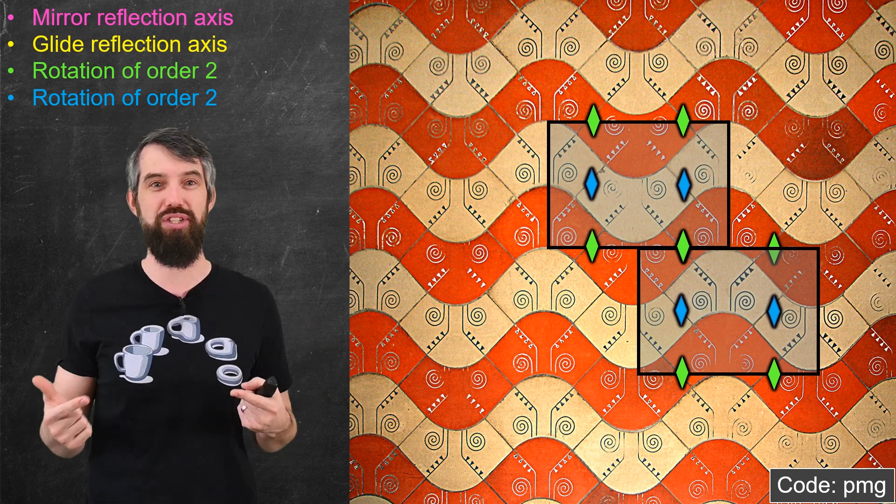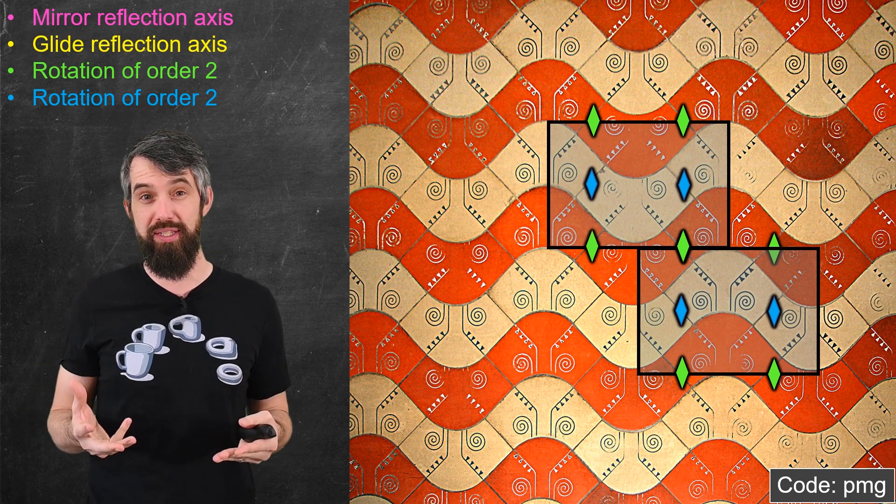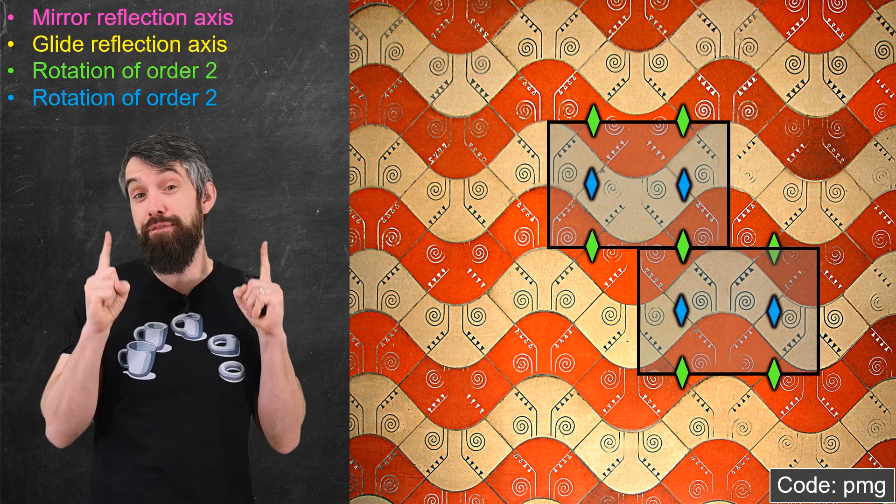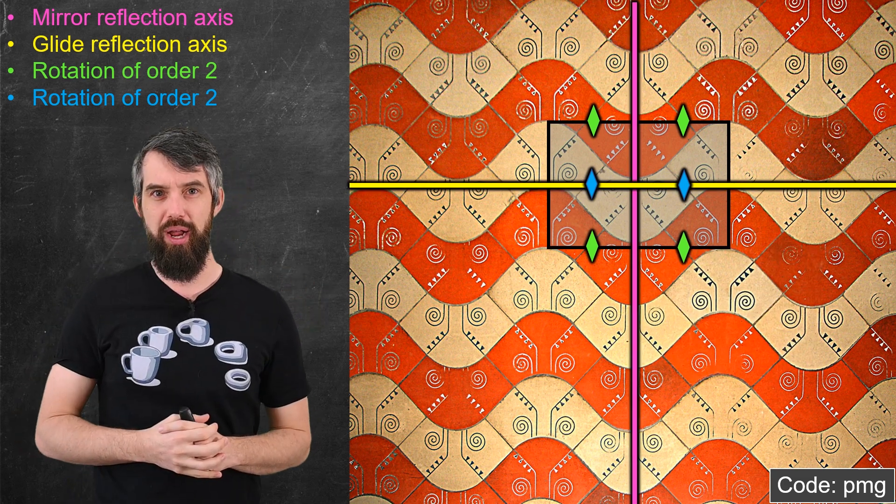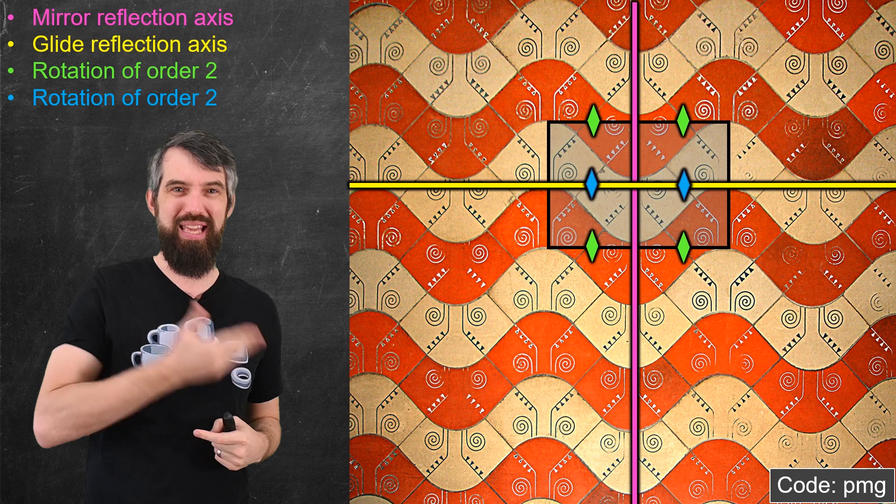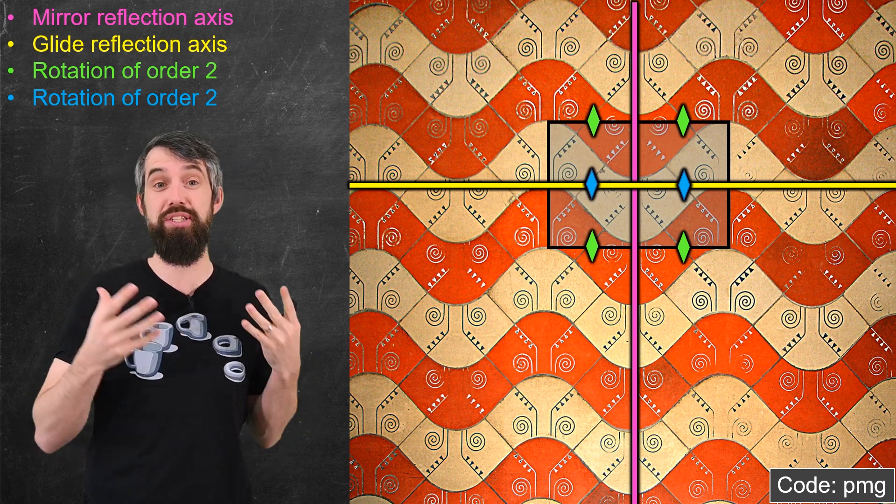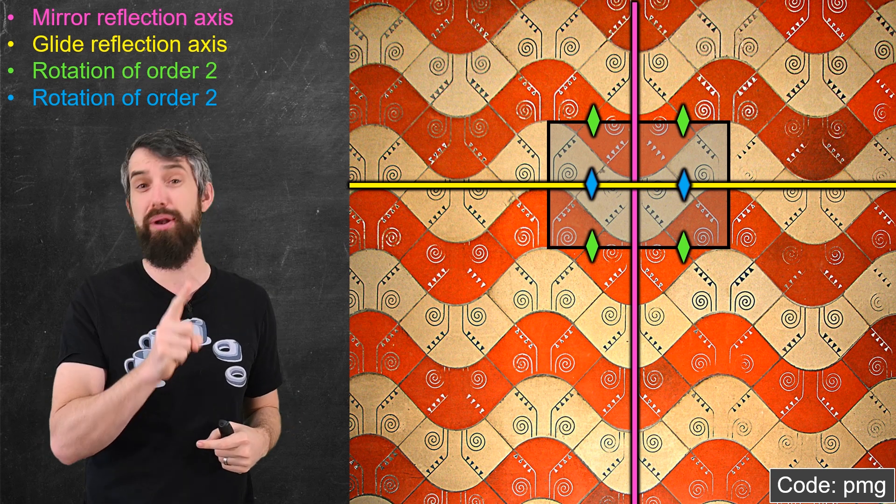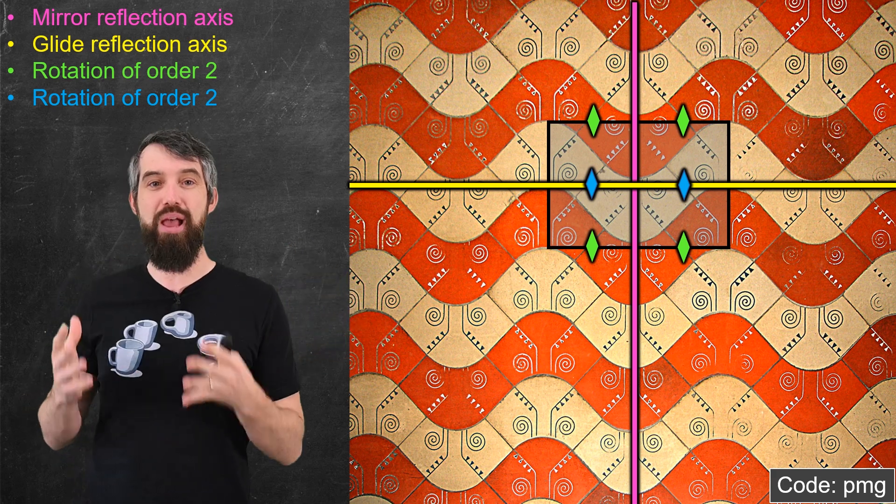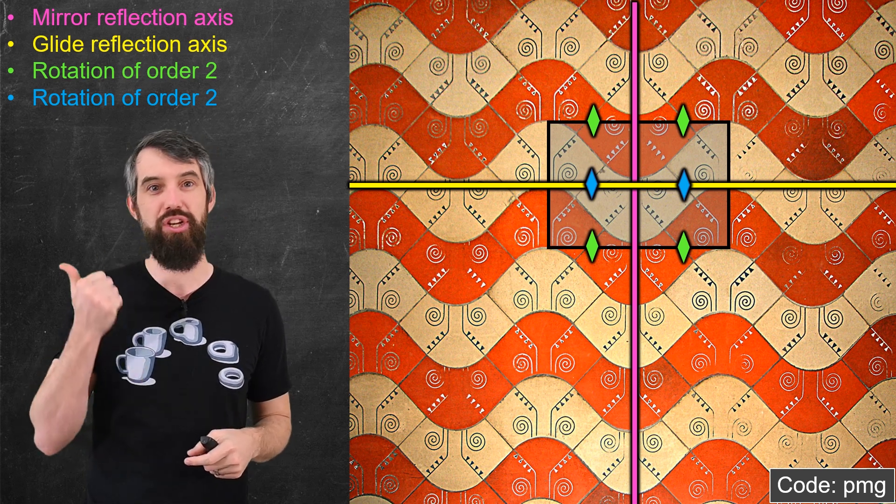So of these sort of six spots that I observe in the cell, I think there's only two that are fundamentally different. And so this type of wallpaper, this one that's given this code PMG, M here stands for mirror by the way, G here stands for glide, and P stands for primitive, which I'll talk about a little bit later.